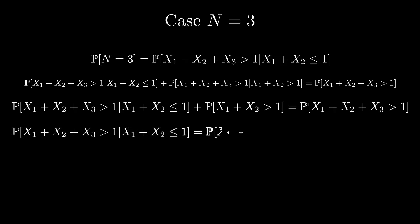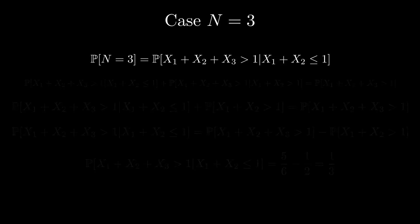So the middle term can be simplified. Finally, the probability required boils down to the probability that the sum of the first three variables exceeds 1 minus the probability that the sum of the first two variables exceeds 1, which is 5 over 6 minus 1 over 2, which gives us 1 over 3.